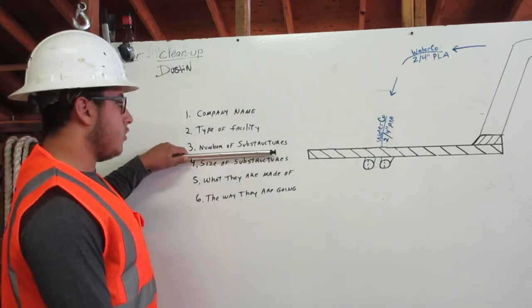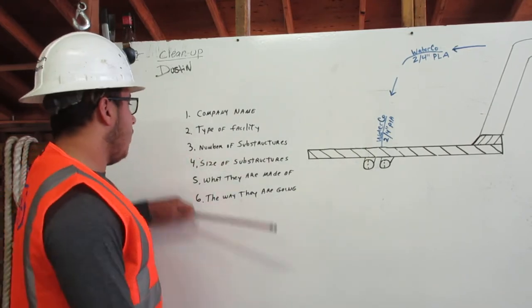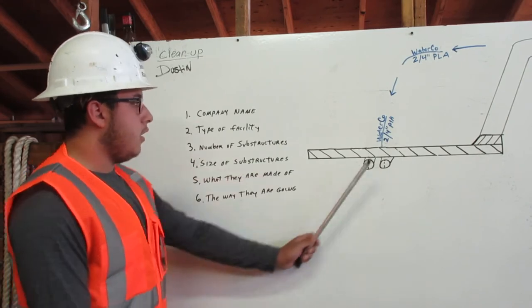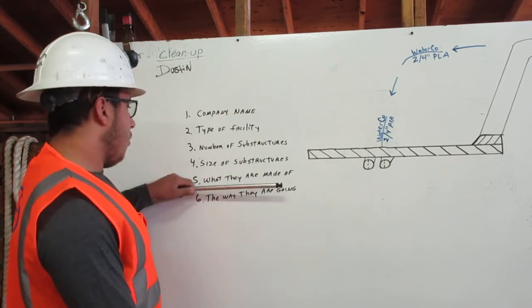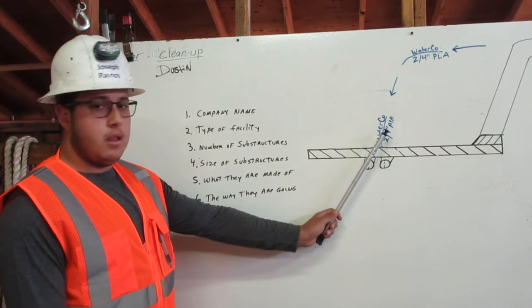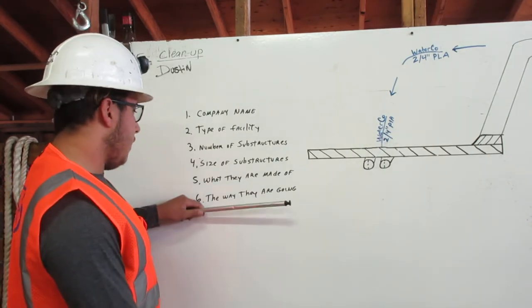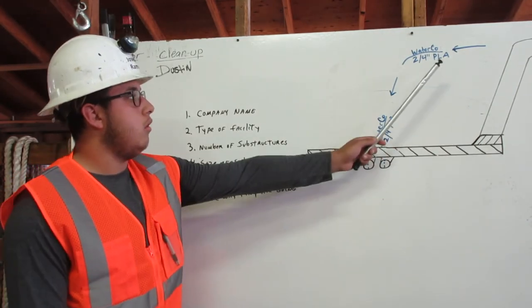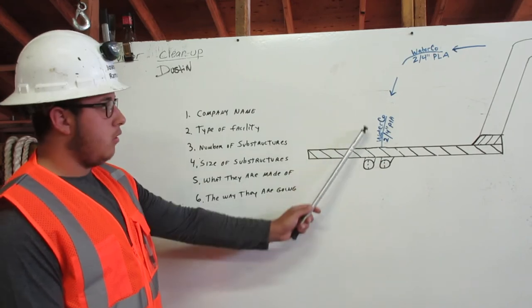The number of substructures is two. The size of the substructures is four inches. What they are made of is PLA means plastic, and the way they are going, by the blue arrows, we know that the water is flowing this way.